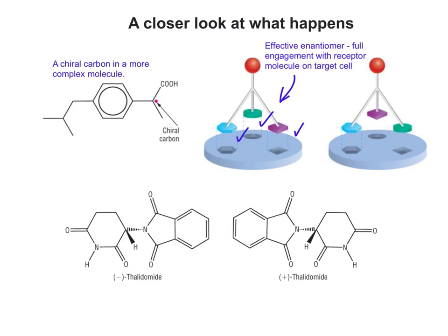So if we look at an effective enantiomer, it's going to fully engage with the receptor molecules in a target cell. Whereas the ineffective enantiomer doesn't fully engage with the receptor molecule, as you can see, the shapes don't add up. It's a little bit more complex than that, obviously, but this is a simplification diagrammatically.